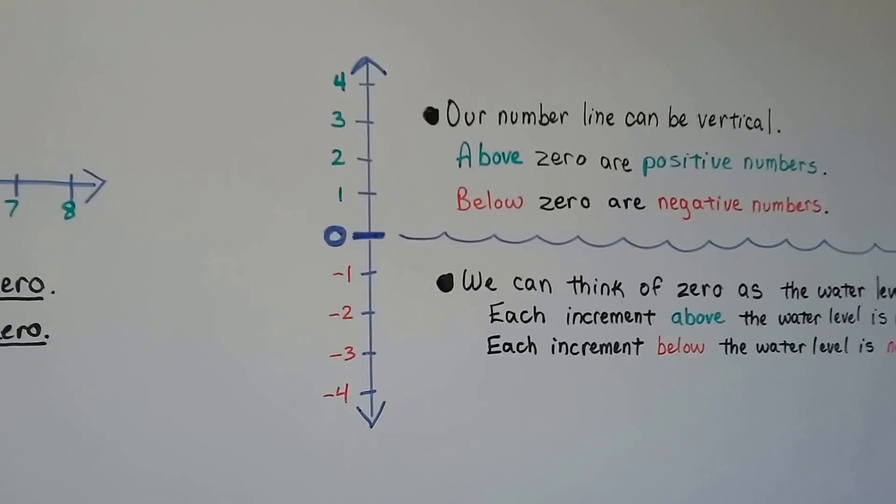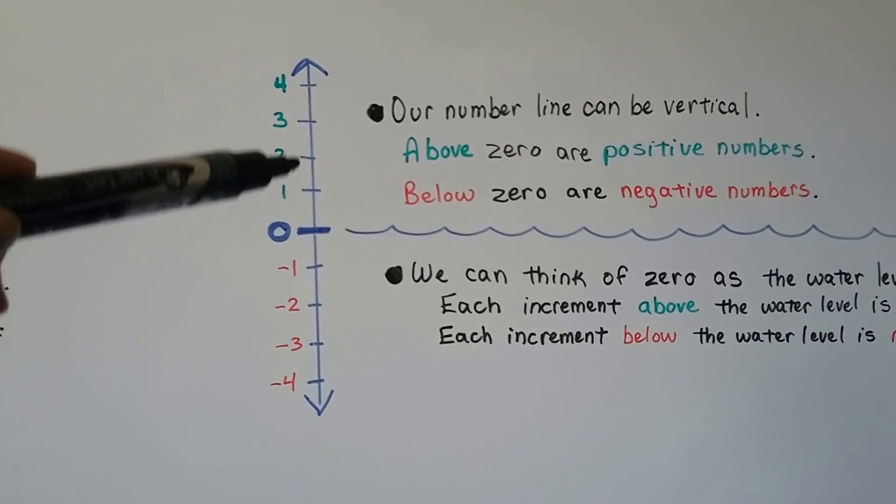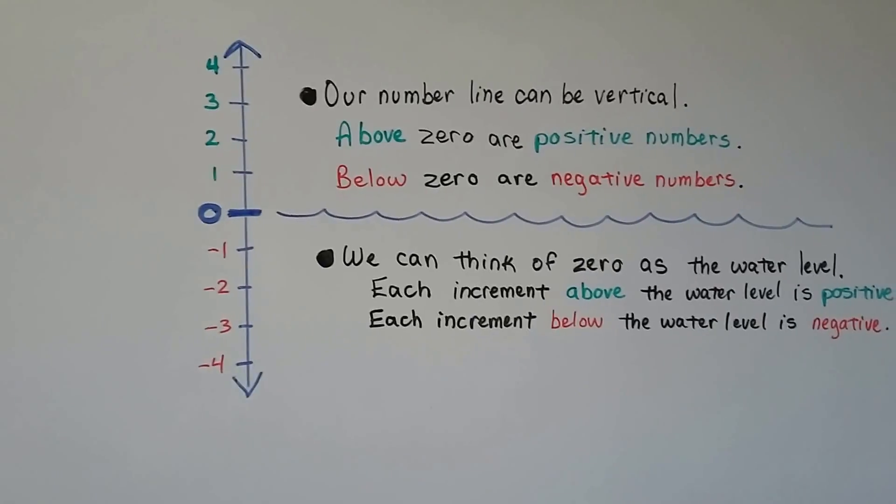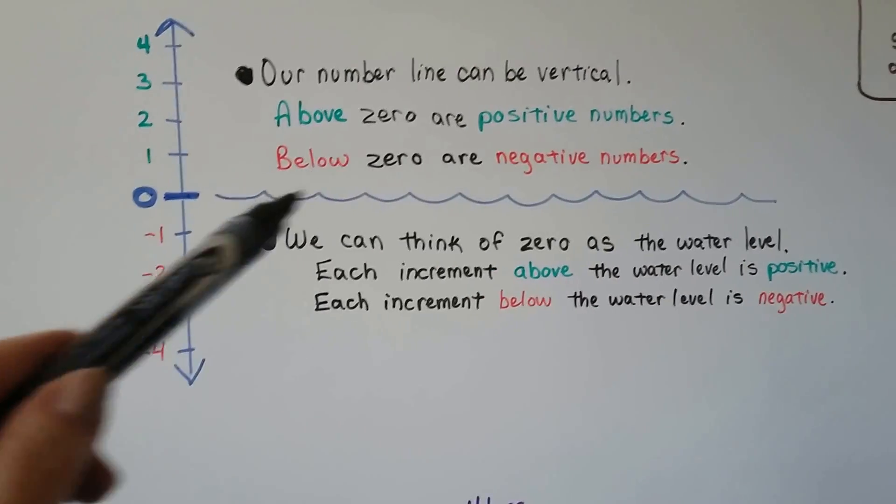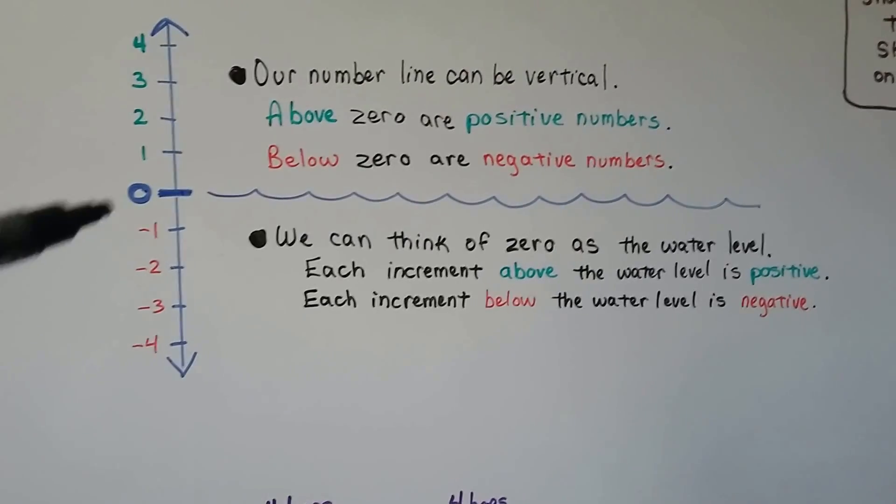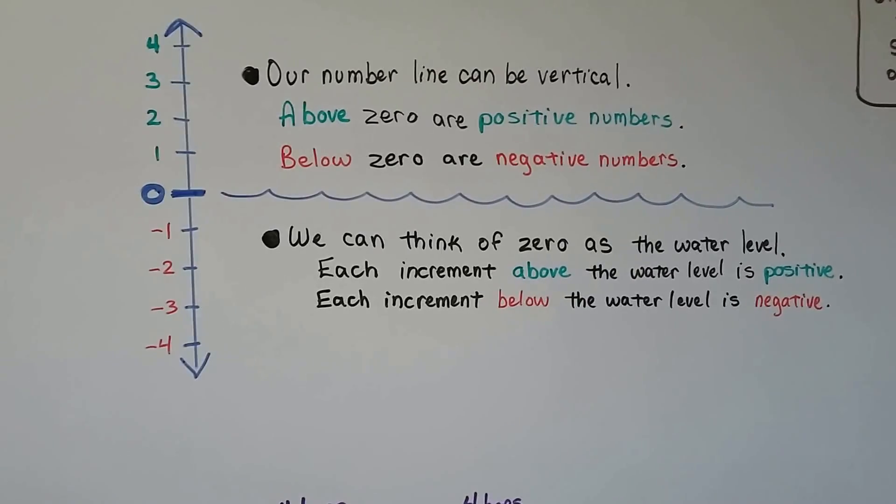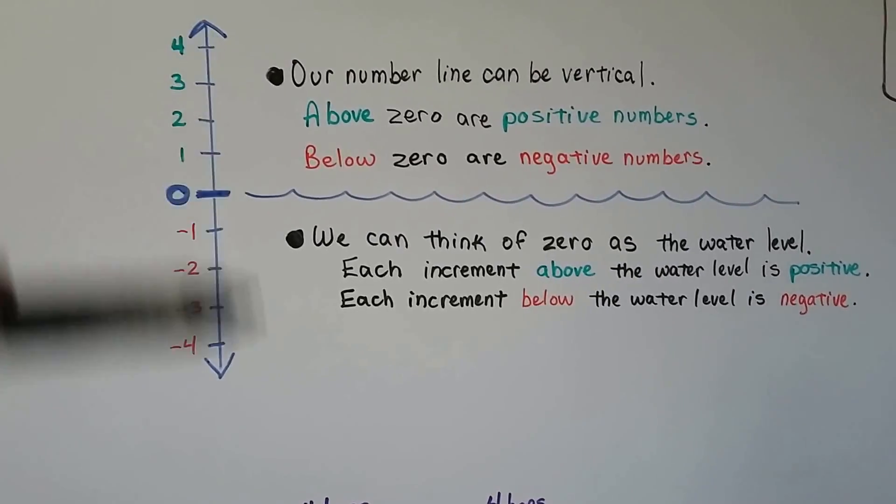Our number line can be written vertically. We've got above 0 are positive numbers and below 0 are the negative numbers. So you can think of this as 0 is the water level. It's the water line. It's sea level. And each increment above the water is positive and below water is negative. So you can go dive or jump, couldn't you?